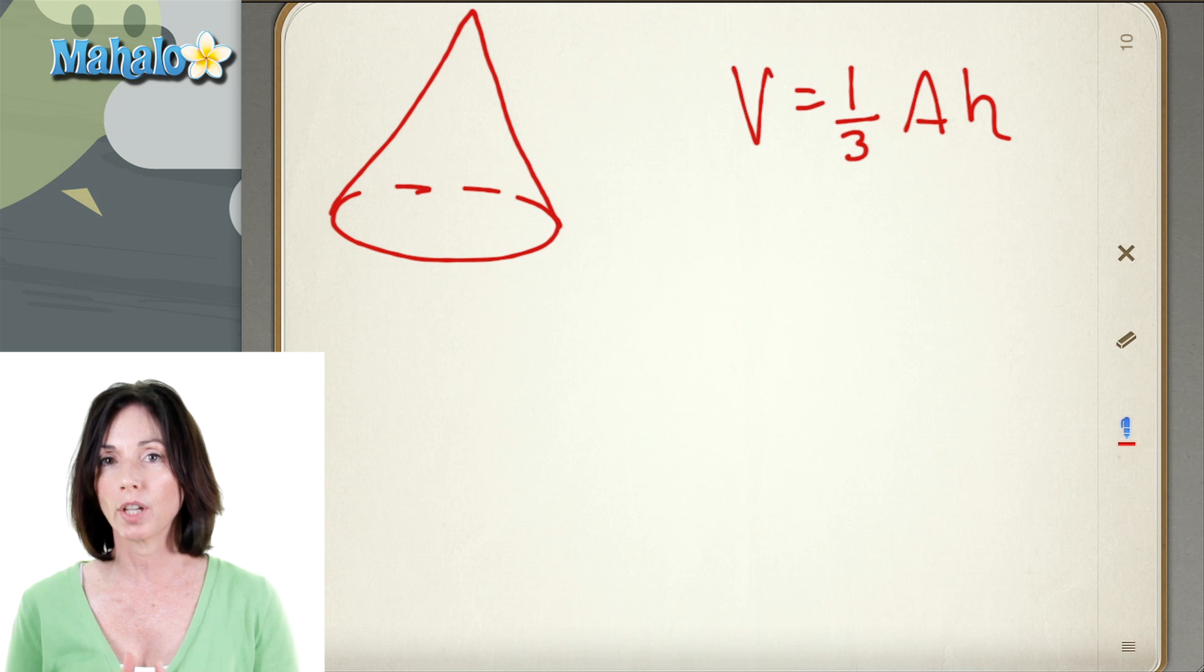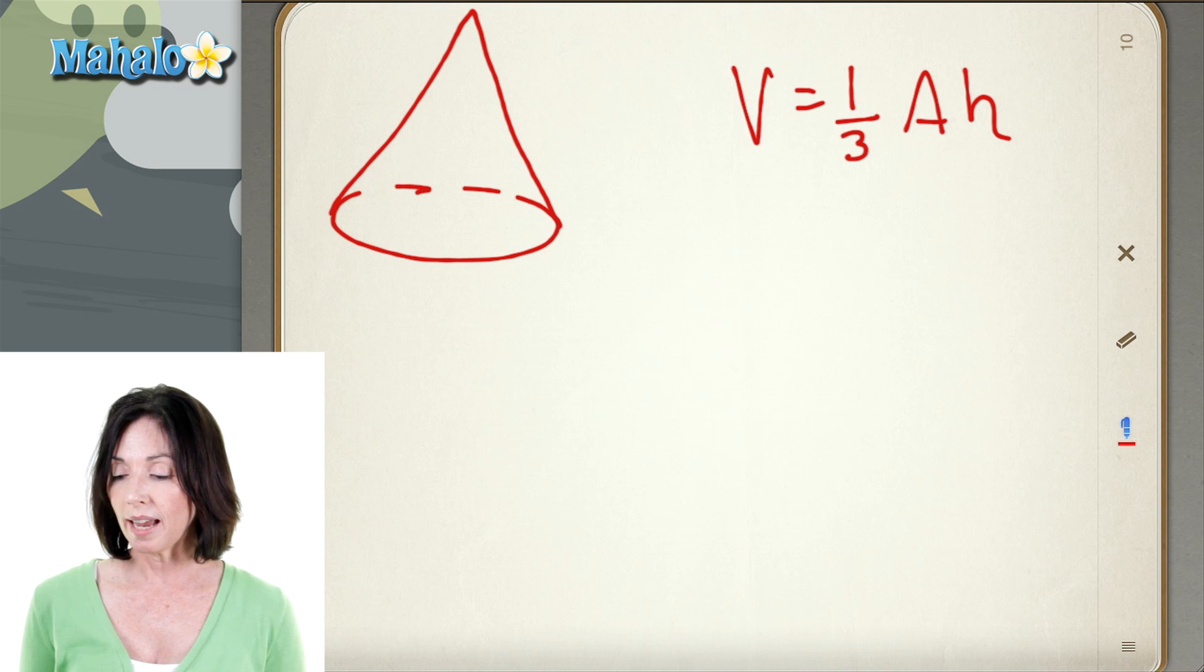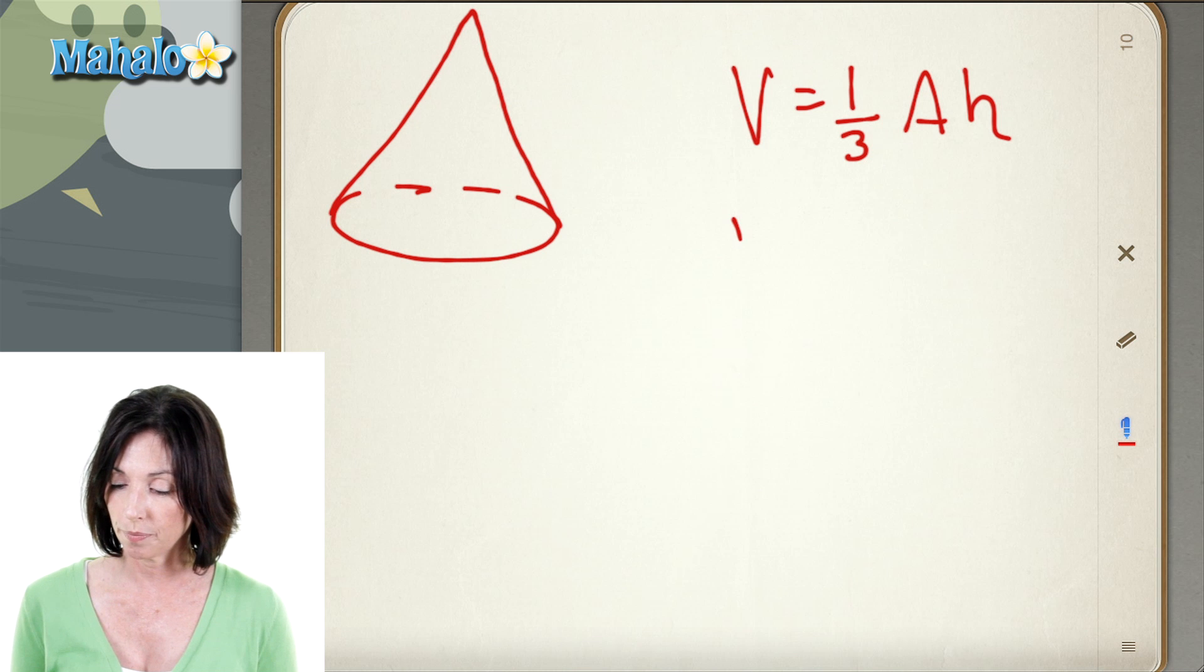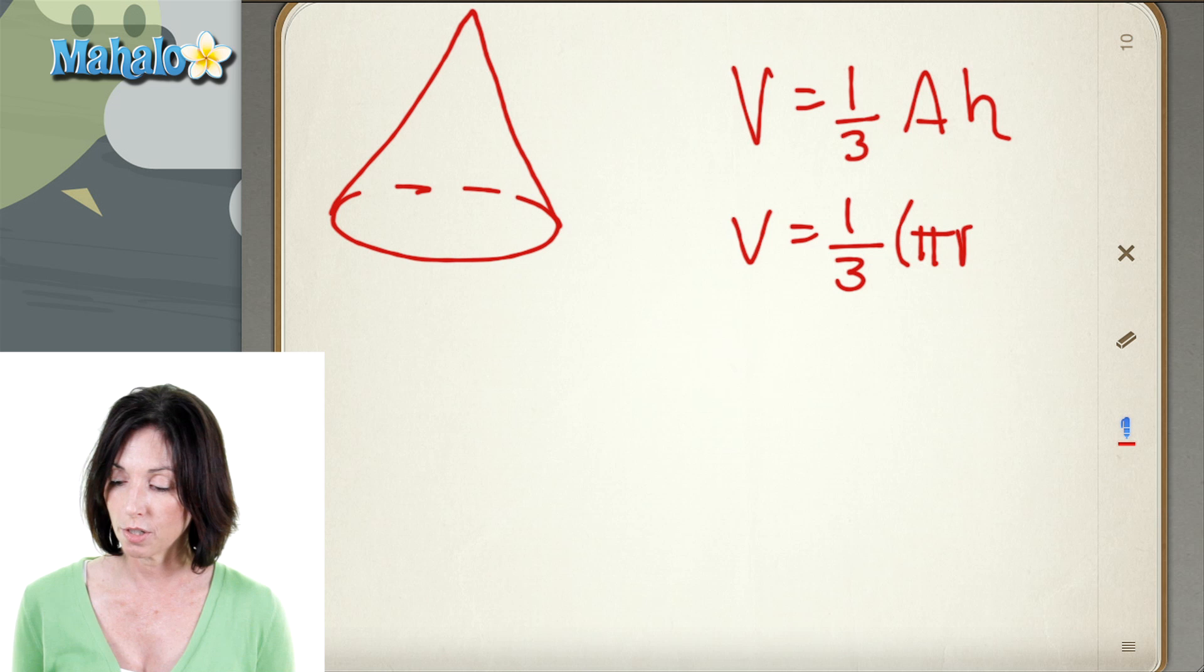So the base of the cone is a circle. The area of the base, we can put in the formula for the area of a circle. So the volume is equal to one-third times pi r squared multiplied by the height.